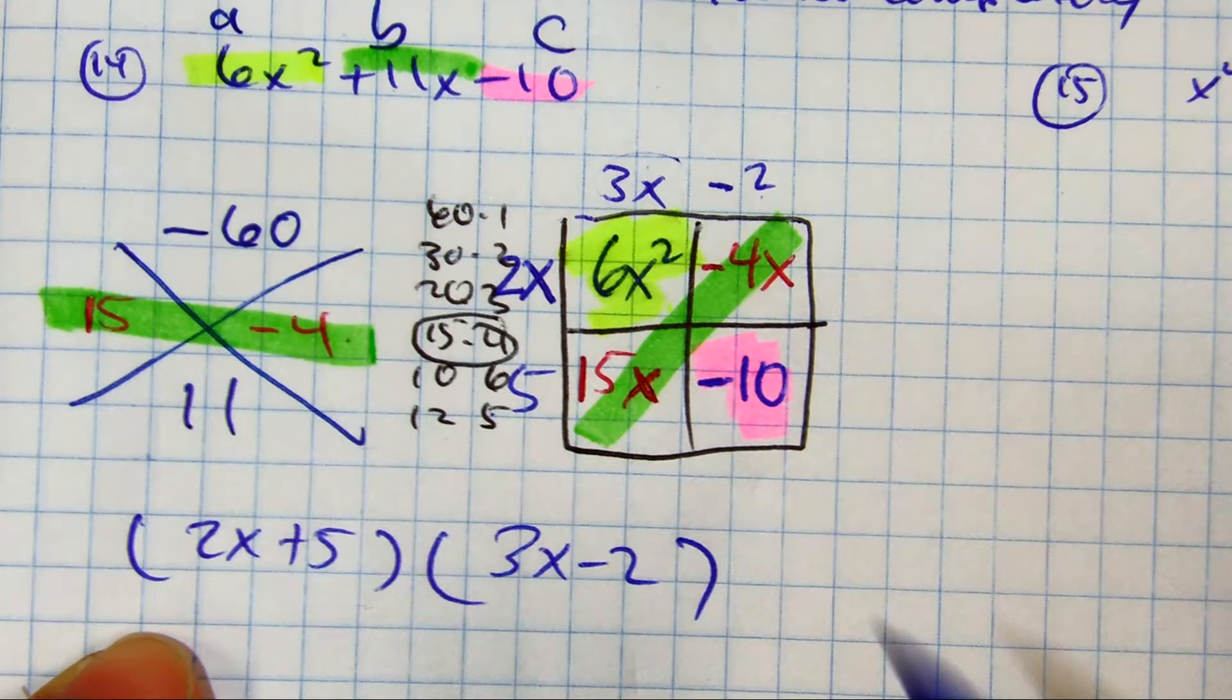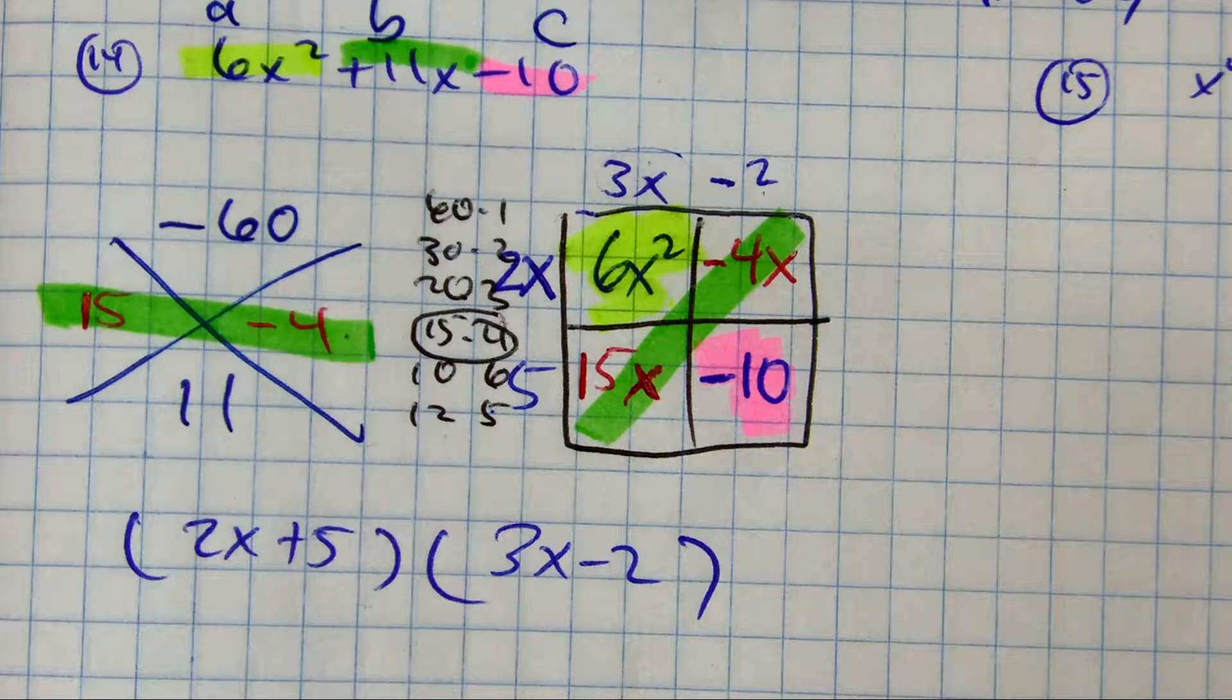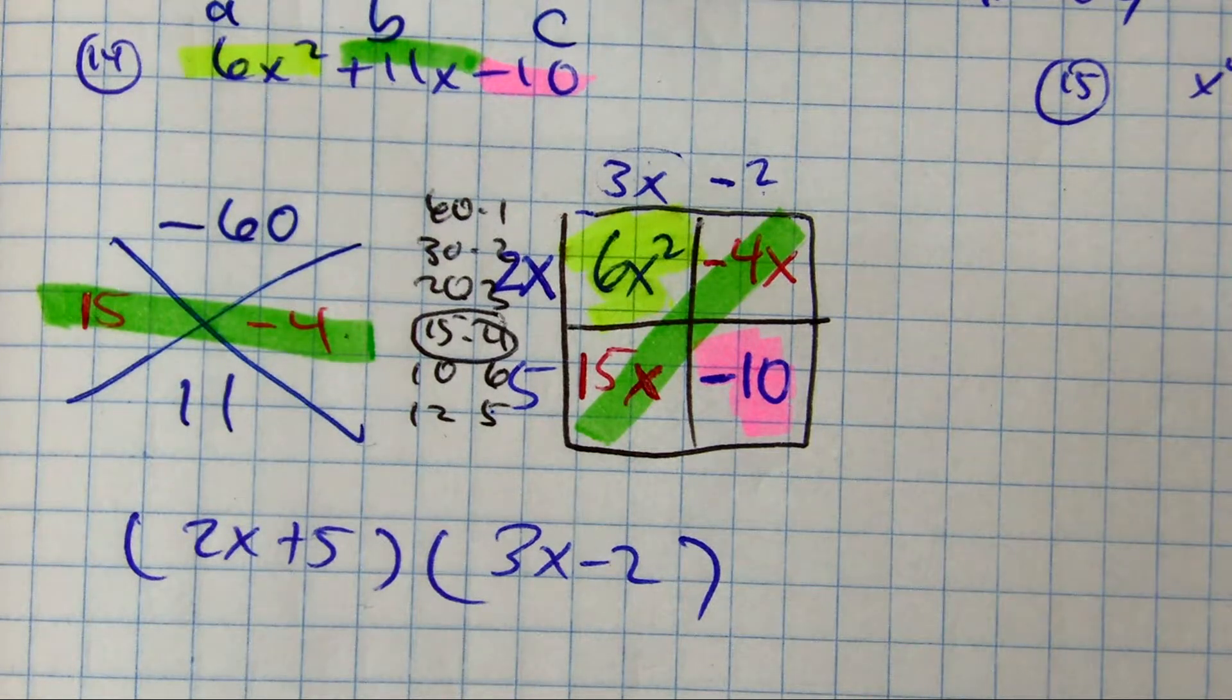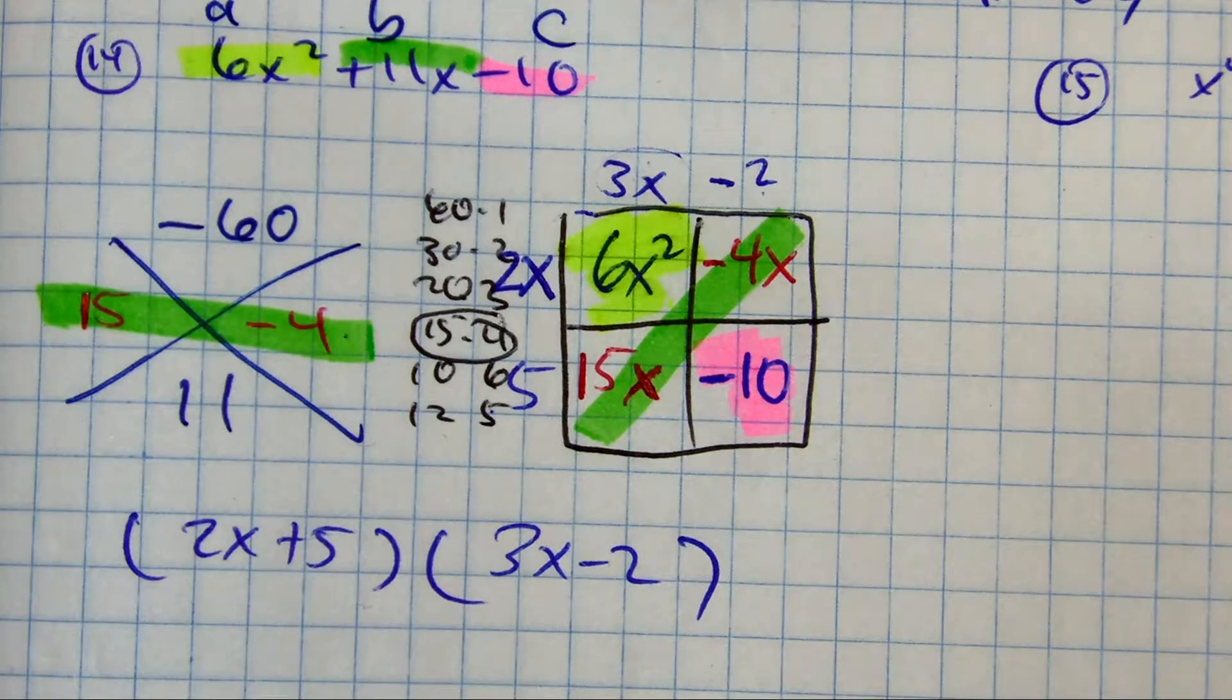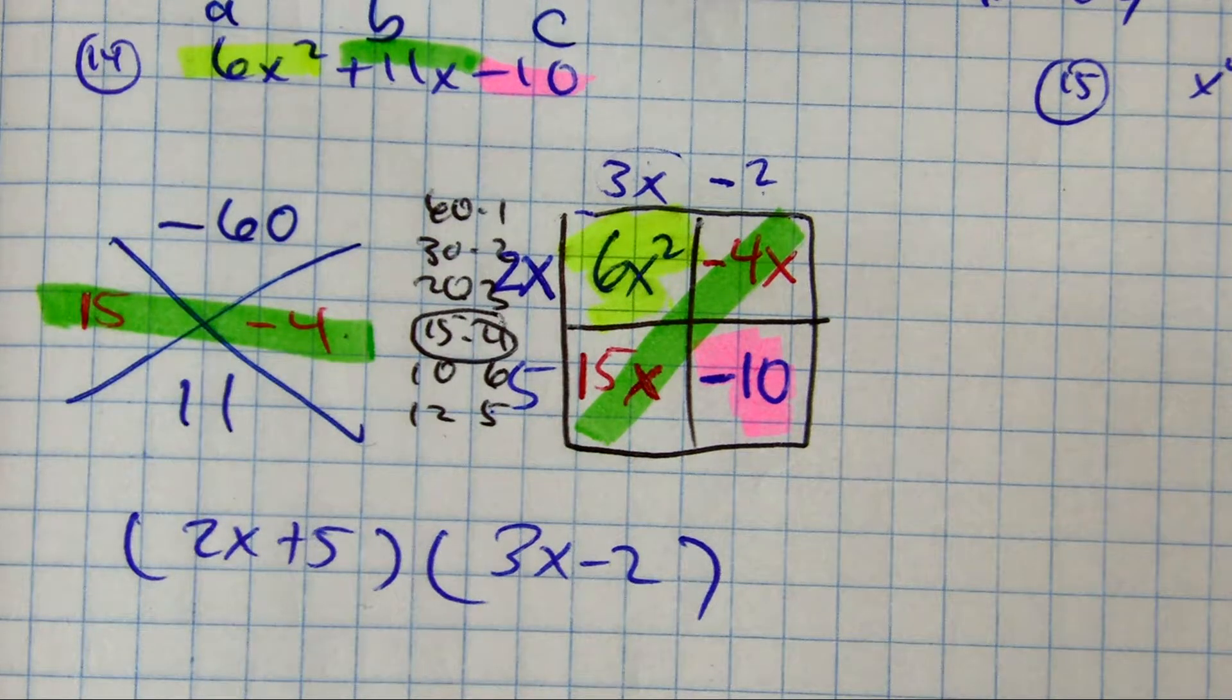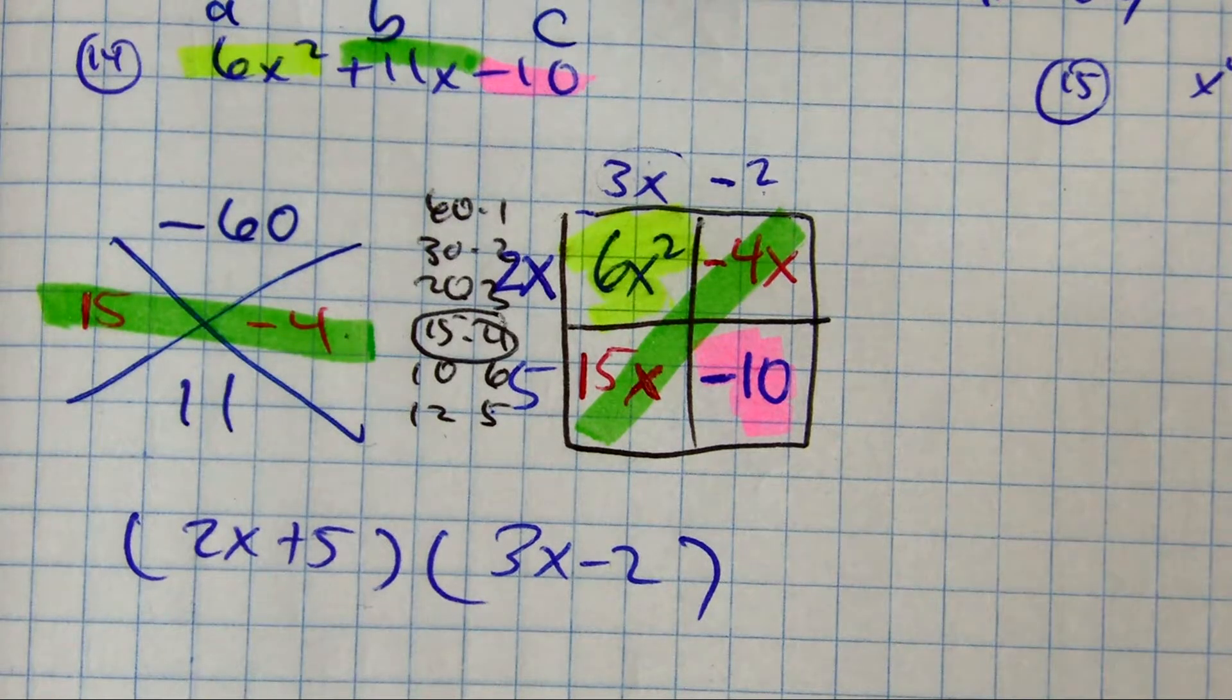Partner A to partner B, how do you check your answer? Aiden, how do you check your answer? How do I know this is right?